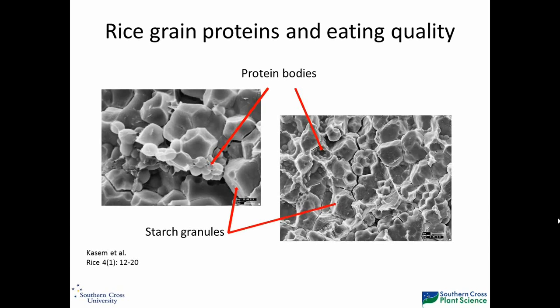Prior to fully understanding what was going on with starch and the impact it had on quality, it was very hard to ascertain the impact of proteins — it comes down to that trait definition question again. If starch is varying across your experiments but you're not fully aware of its impact on the different instrumental measures of quality, it's very hard to understand what role protein plays. Now that we understand the role starch plays, it allows us to have a closer look at proteins and the extent to which they may explain some of the remaining variation in quality — which is secondary to starch, but starch does not explain all the variation.